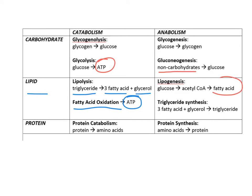Lipogenesis is the synthesis of fatty acids from acetyl-CoA. During cellular respiration, glucose gets converted into acetyl-CoA before entering the Krebs cycle. That acetyl-CoA could enter the Krebs cycle or be converted to a fatty acid, which decreases blood glucose while increasing fatty acids. Those fatty acids can then combine with glycerol to reform triglycerides, essentially storing excess glucose as fat.